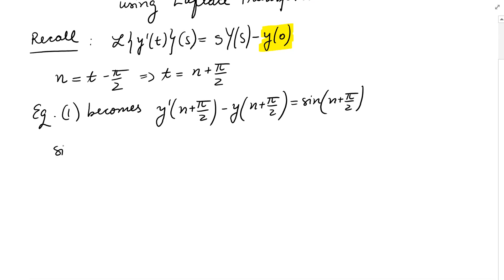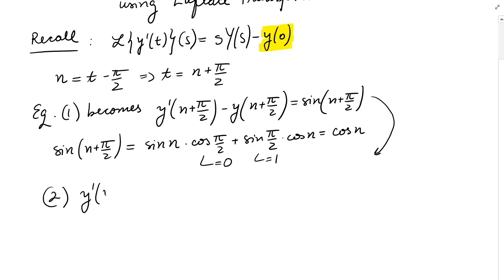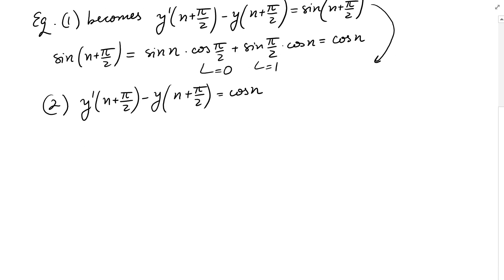Now sin of (n plus pi over 2) can be computed using trigonometric formulas: it equals sin(n) times cos(pi over 2) plus sin(pi over 2) times cos(n). We know cos(pi over 2) is 0 and sin(pi over 2) is 1, so we end up with just cos(n). Our equation becomes equation 2: y prime of (n plus pi over 2) minus y of (n plus pi over 2) equals cos(n).